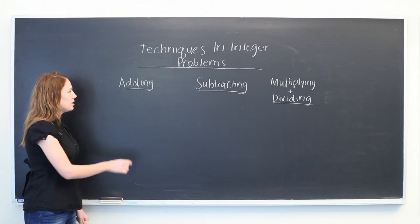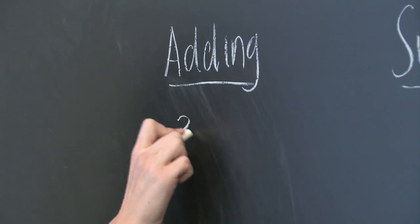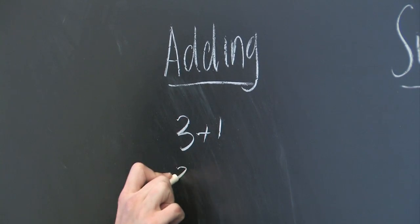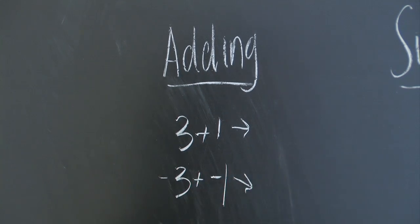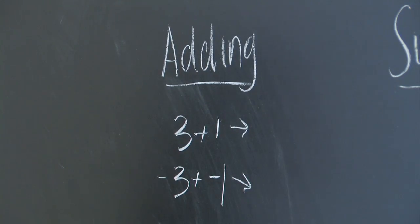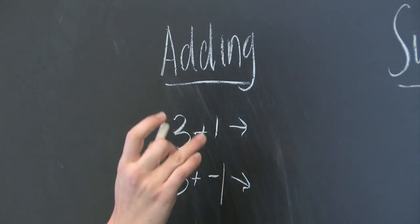Adding integers that are both positive or both negative, all you have to do, 3 plus 1, is just add them as you normally would. It's a little basic, so we know this is 4.